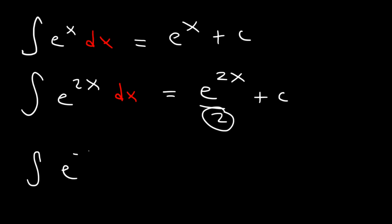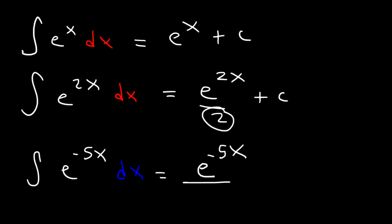What do you think the answer is for the antiderivative of e to the negative 5x dx? It turns out that it's going to be e to the negative 5x divided by the derivative of negative 5x, which is negative 5, plus c.